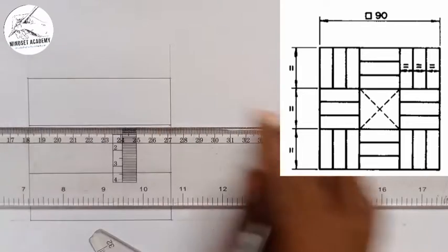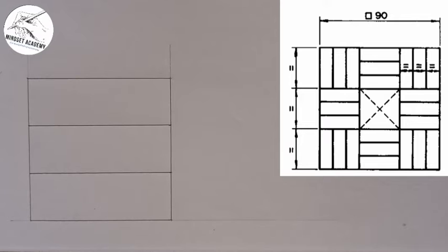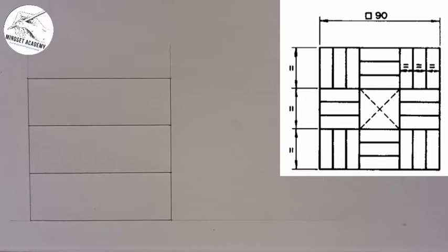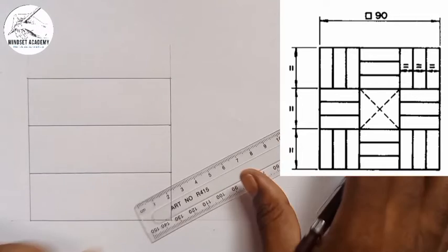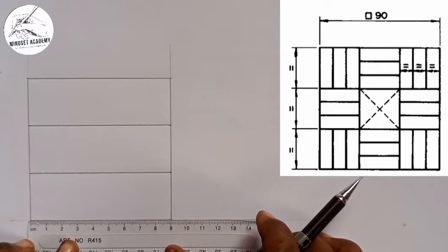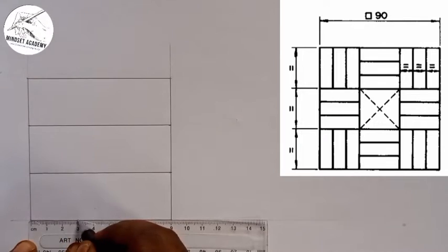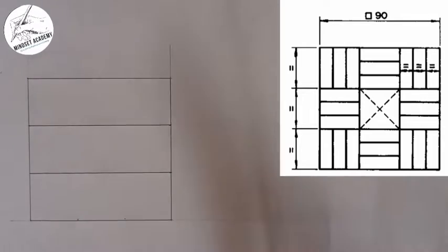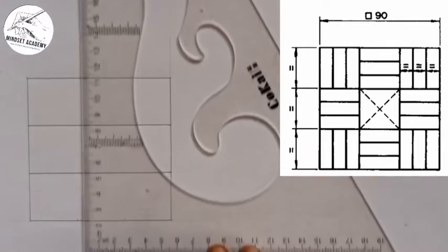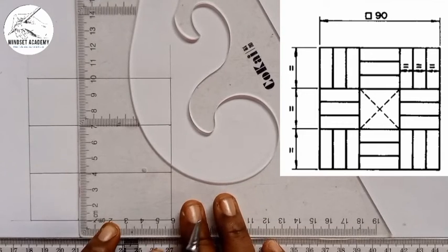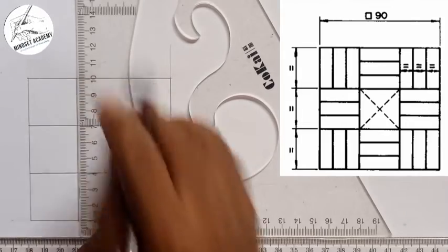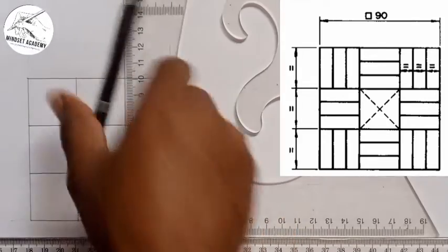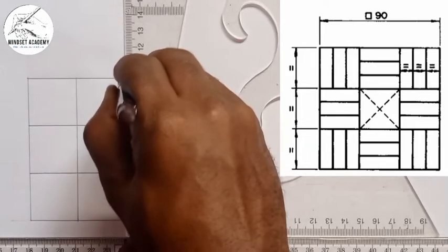I'll draw a thick line here, and also mark the divisions on the horizontal line — same thing, three divisions. Dividing 90 by 3 still gives 30mm each. I'll measure: zero to three is 30, three to six is another 30. I'll place my set square on my T-square, move to each point, and draw vertical lines.